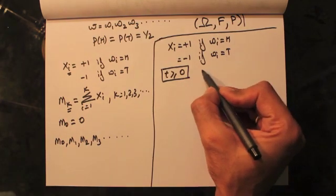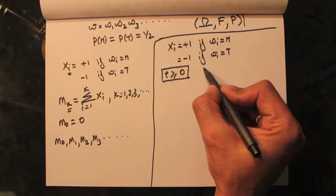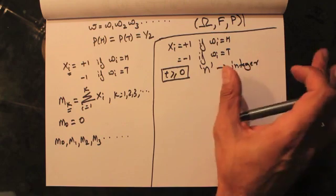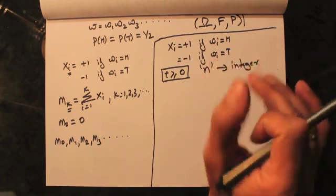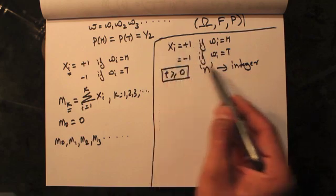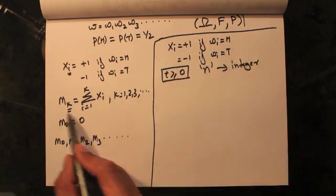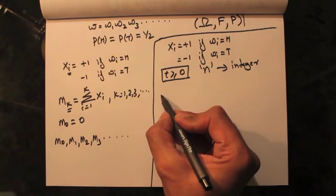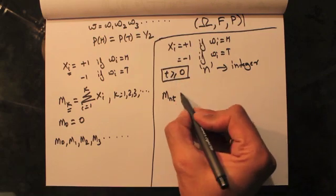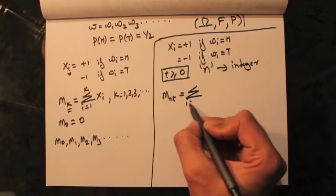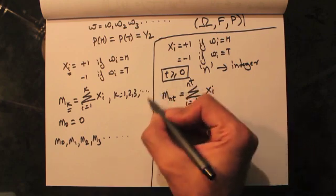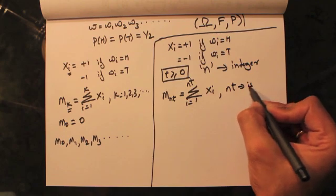Secondly, I would like to define an integer denoted by n. The exact value of n isn't critical right now. Given the series of random variables x of i, I would like to define another series of random variables called m of nt, where n is this integer and t is our time. This is given by the summation from i equals 1 to nt of x of i, but this definition is valid only if nt is an integer.